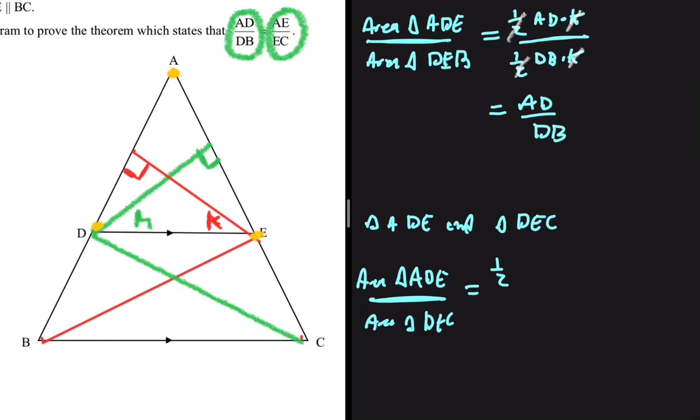The base of triangle ADE is AE and then the height is H divided by the area of triangle DEC. So we have a half. The base is EC and the height is H.